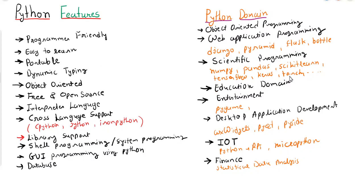These are the features of Python and these are the domains where we can use Python. How you should start learning Python — the answer is you should start with basic Python first, complete the introduction to Python, and then in whatever domain you like, you can start working with Python. In the next tutorial, we will learn how to install Python and how to run the simple program Hello World. Thank you.